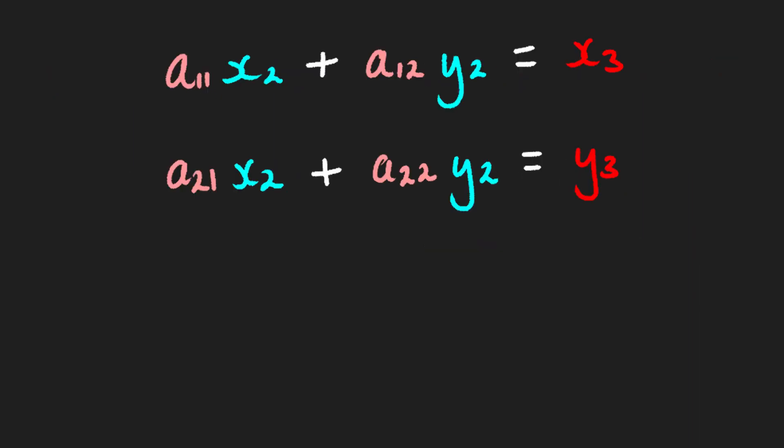So on the screen we have our generic linear equations transforming x2, y2 onto x3, y3. So now let's start moving towards our goal of getting x3, y3 in terms of x1, y1, because then that will tell us how to transform from x1, y1 to x3, y3.